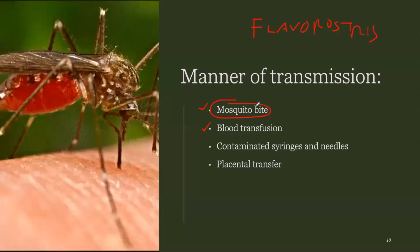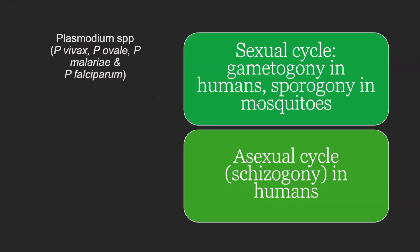There are two important cycles in the life cycle of malaria: the sexual cycle and the asexual cycle. The sexual cycle is known as gametogony in humans and sporogony in mosquitoes. The asexual cycle in humans is known as schizogony. This holds true for all major Plasmodium species.